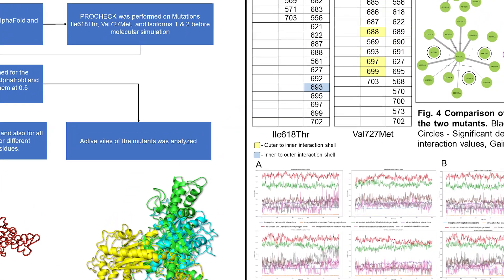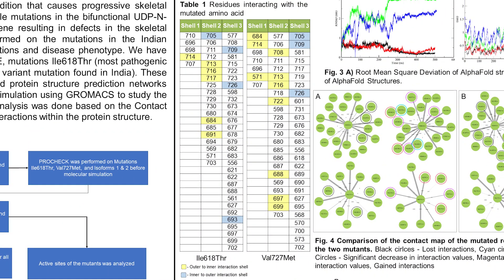We also performed interacting shell residue analysis, akin to electron shells, where the mutation is the nucleus. The first shell of interaction residues are those that interact with the mutant, and the second shell are residues that interact with the first shell residues, and so on. In Table 1, we see interactions depending on directionality — outer to inner shown in yellow, or inner to outer shown in blue — where some interactions are lost.